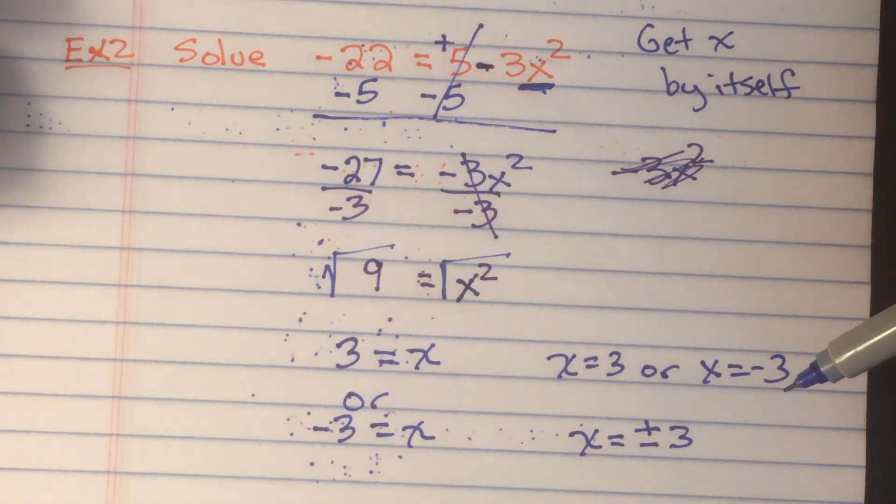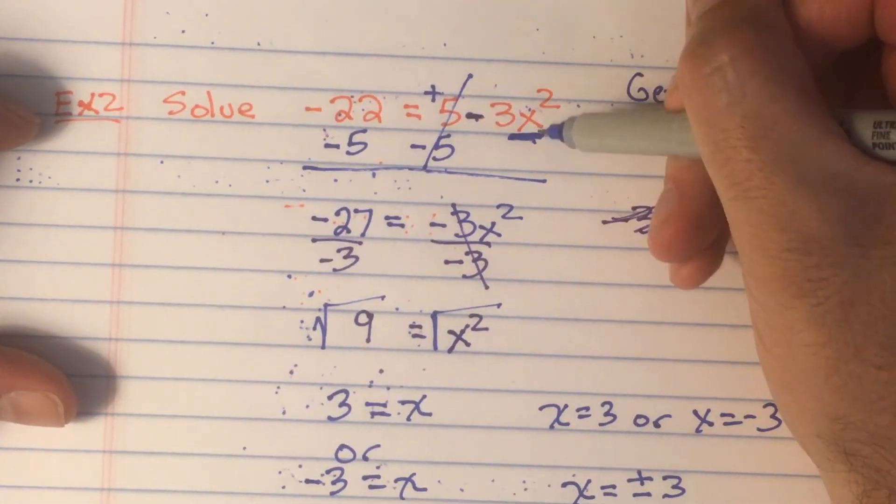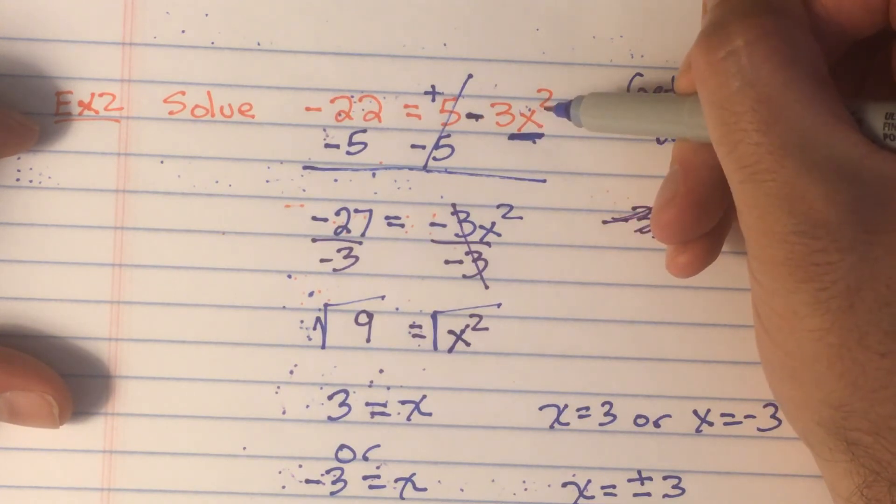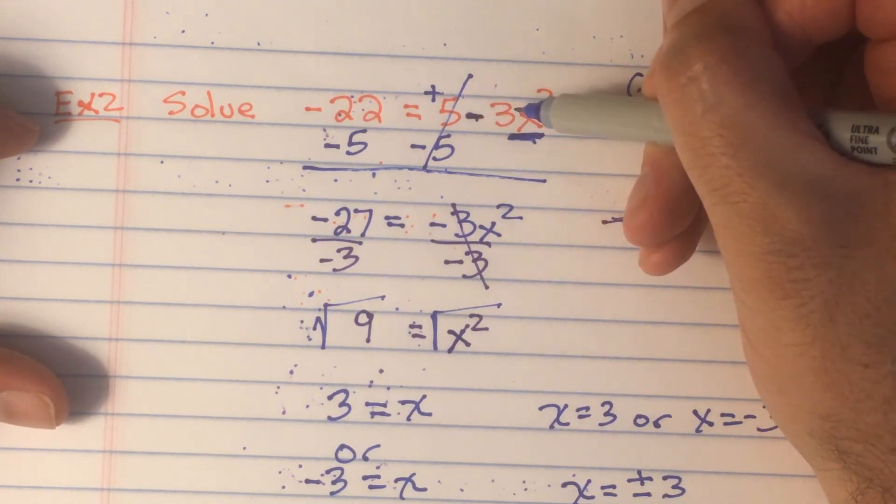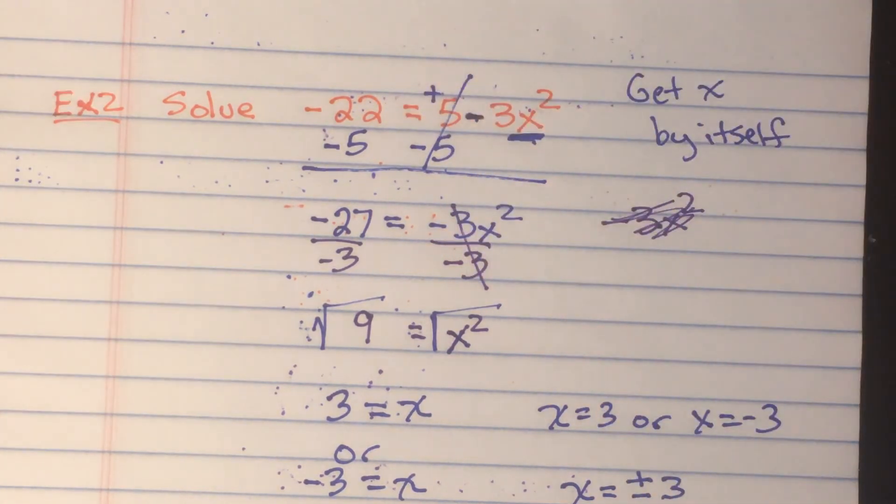Now, as a reminder, you can check any one of these solvings by plugging it back in. If I took 3 and plugged it back in here, 3 squared is 9. Negative 3 times 9 is negative 27. 5 minus 27 would give me negative 22. And I could do the same thing for the negative 3.